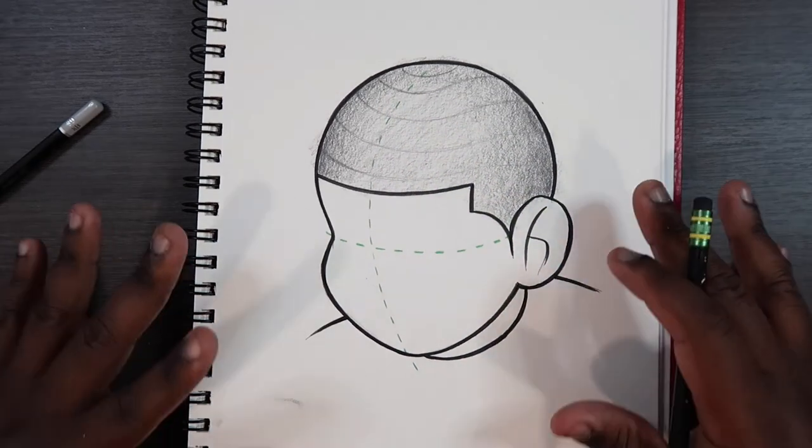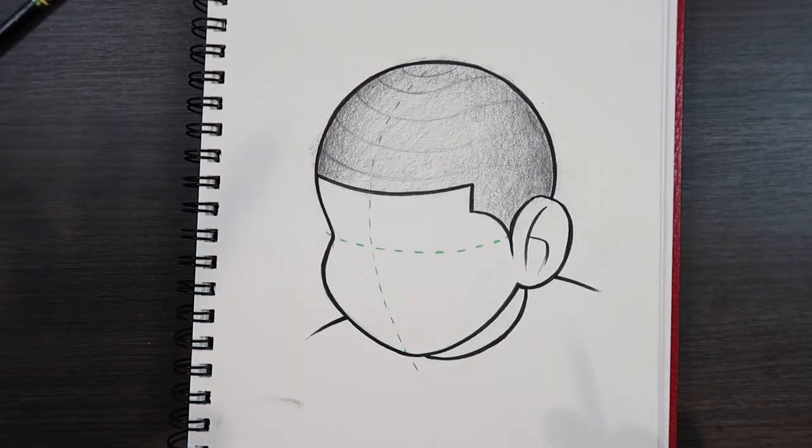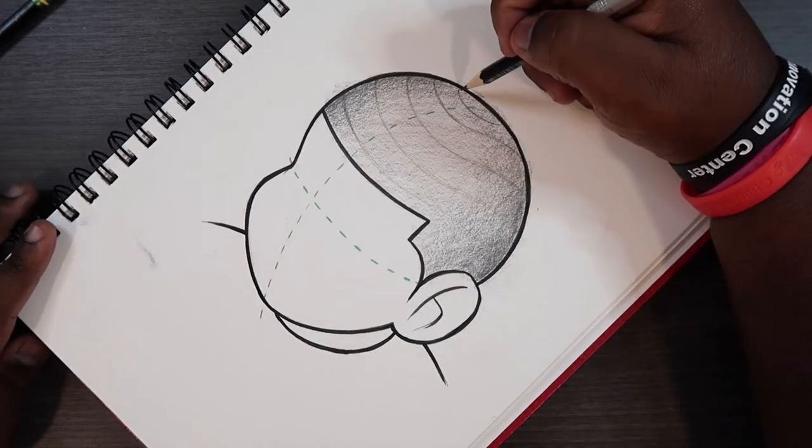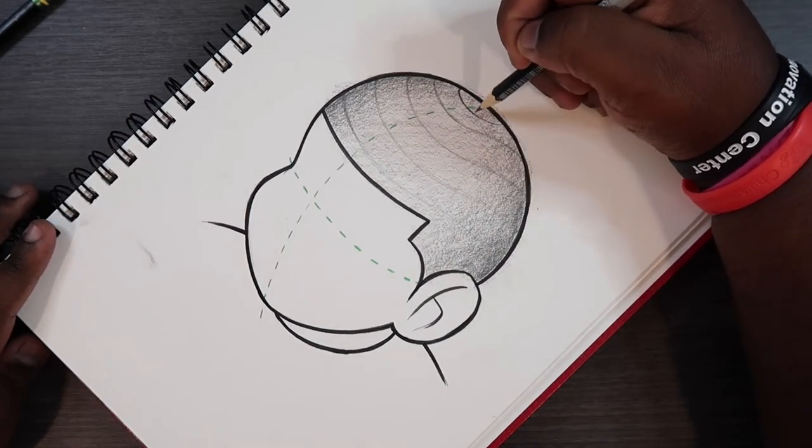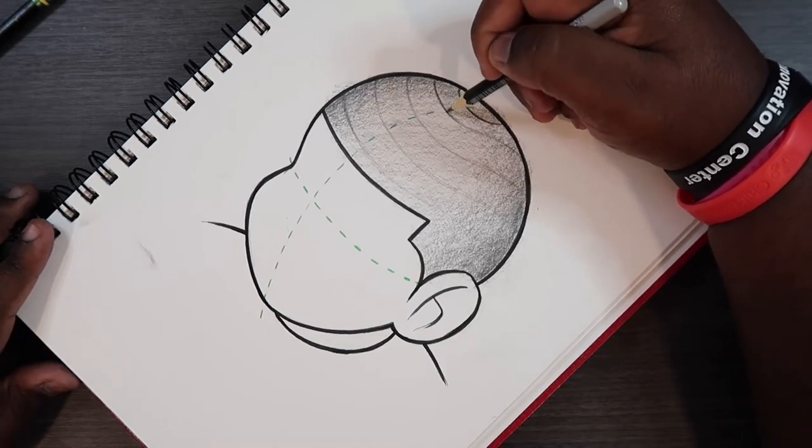All right so you should end up with something that looks like this. Now I'm going to put away the HB pencil for now. I'm going to keep it on my desk because I might use it later. But we're going to grab our 8B pencil and follow the contours of the wave lines.